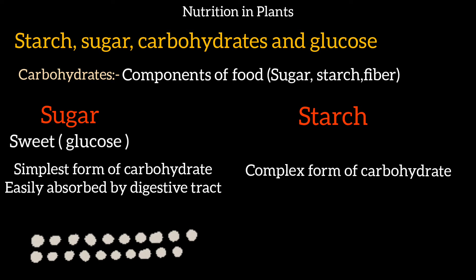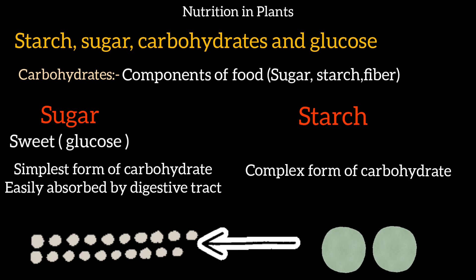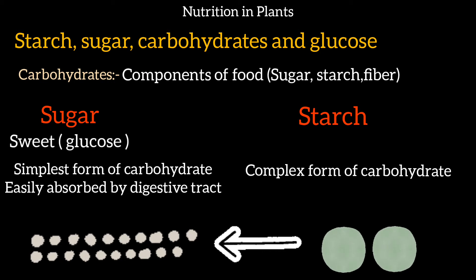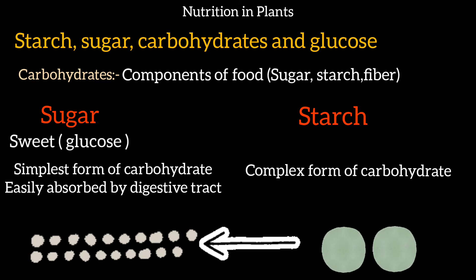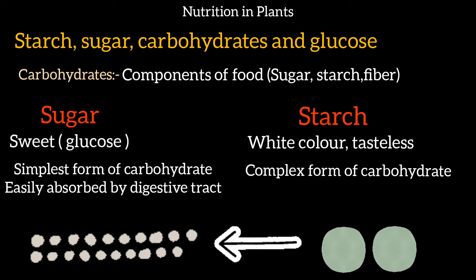Starch is a complex form of carbohydrate — it is in a big form that our body cannot absorb directly. So we need to convert starch into sugar. Starch is white and tasteless, but when saliva is mixed in, it is converted into sugar, which our body can then absorb.